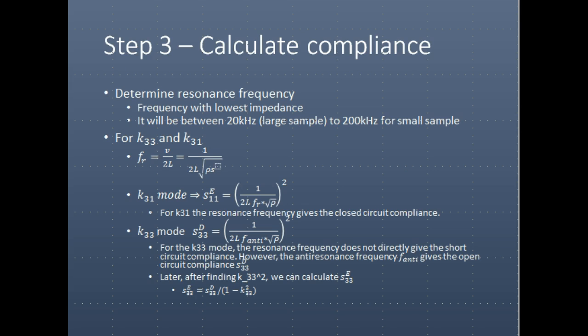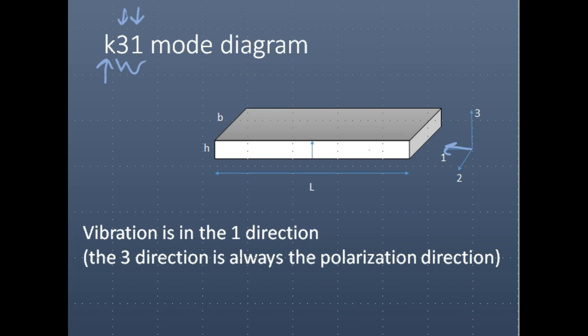Different resonance frequencies are related to different geometries. The length direction is the longest direction, and therefore it will have the lowest resonance frequency. Because it's the longest, it'll have the largest response. So it's best to measure material properties along the 1-direction — we'll be measuring S11 along the length direction because we isolate it and allow it to have the large response.